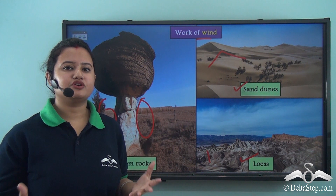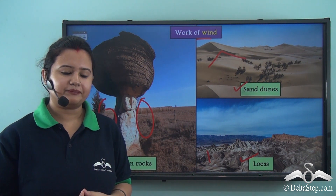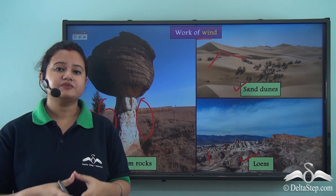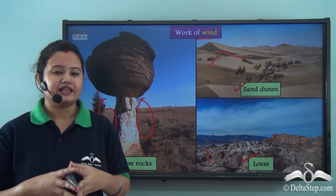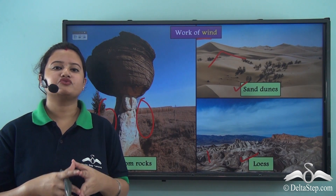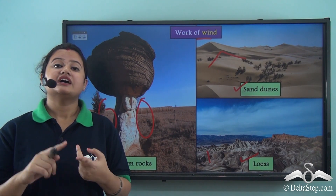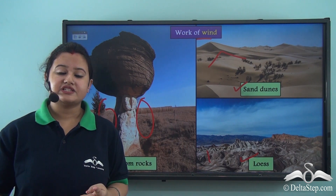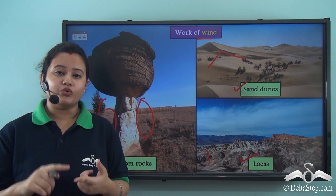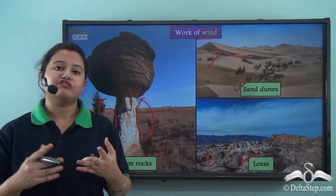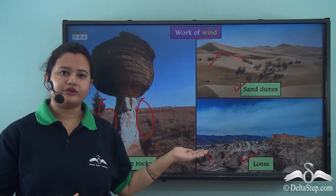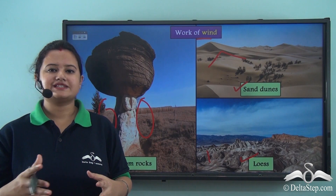These are the different types of landforms formed by the action of wind. In today's lesson, we discussed different types of landforms formed by various natural forces like waves, glaciers, and wind. The prominent landforms formed by waves are caves, stacks, sea arches, cliffs, and beaches. The landforms formed by glaciers are moraines and lakes. The landforms formed by wind are mushroom rocks, sand dunes, and loess. This brings us to the end of today's lesson.